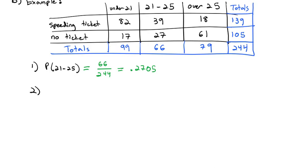We could also do maybe the probability that someone has no tickets. Very similar, I'd say, well, no tickets, the total there is 105. 105 out of the grand total, which is 244. And when we divide 105 by 244, we get 0.4305 for our probability.